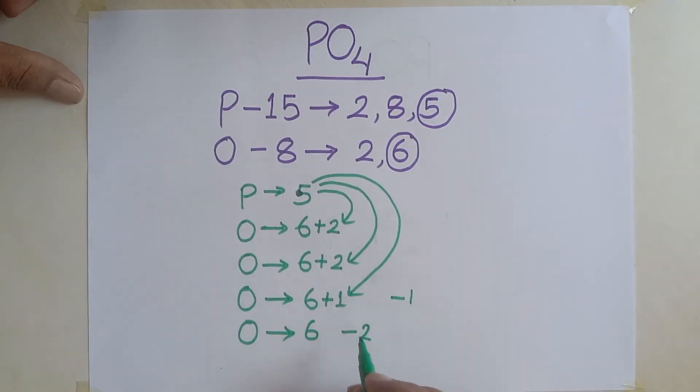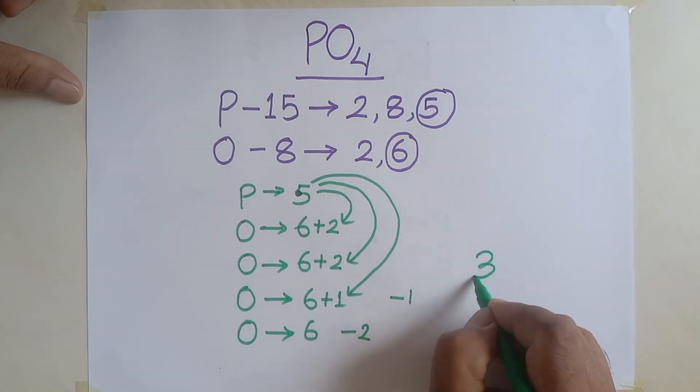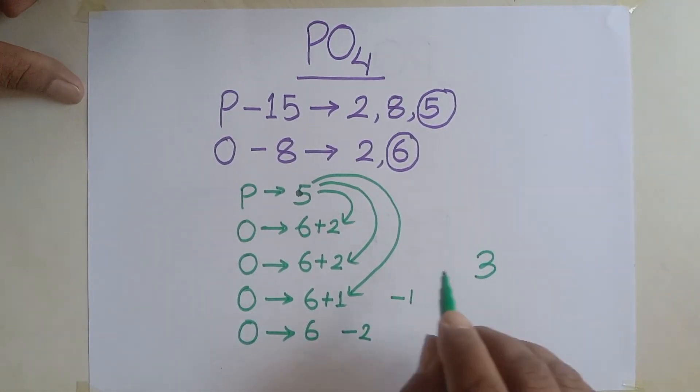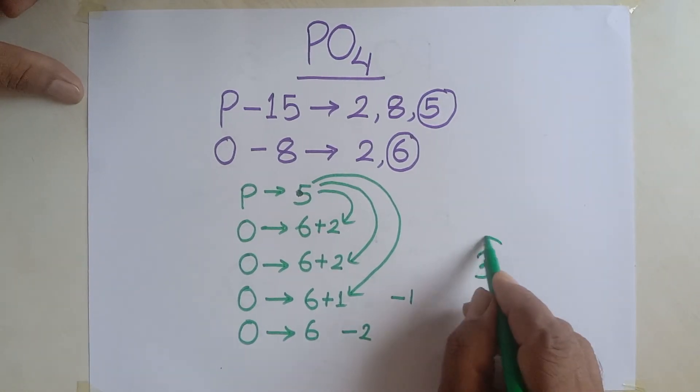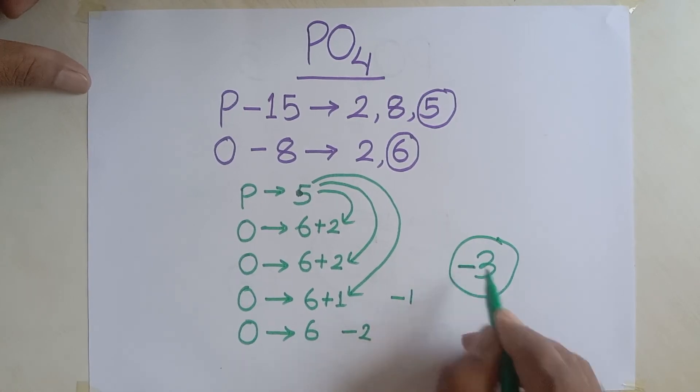It means, all together, it requires three electrons. And since it requires three electrons to fulfill the outermost shell, so its valence is three. And requirement of three electrons means it is negative.